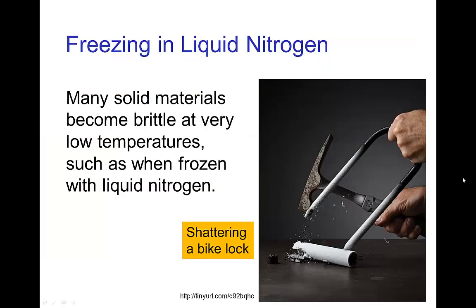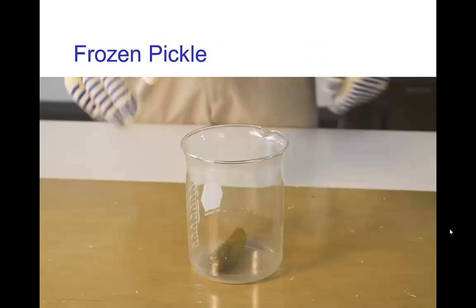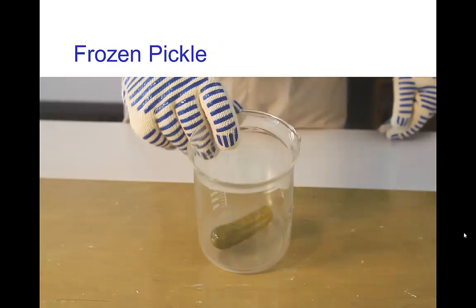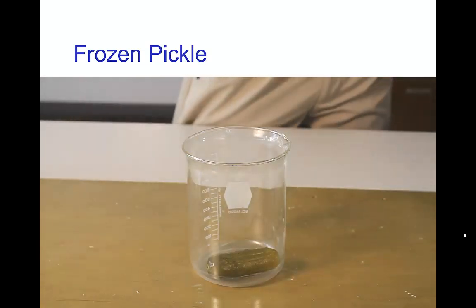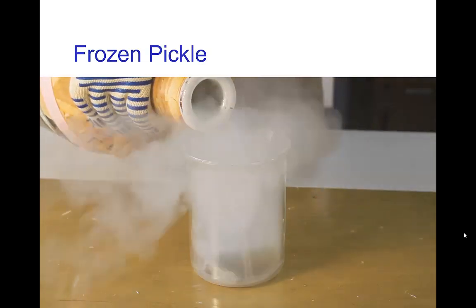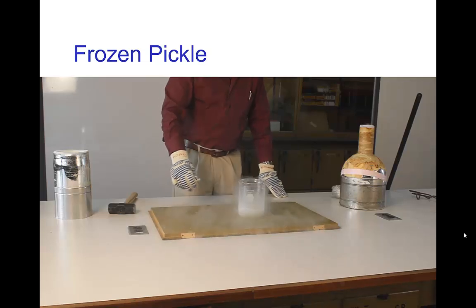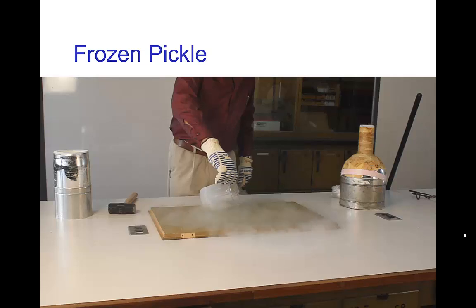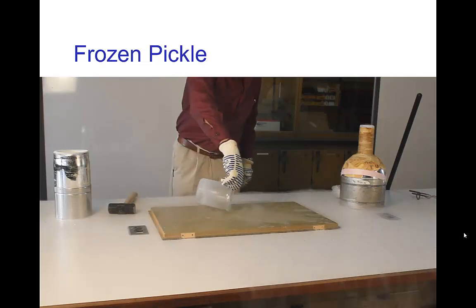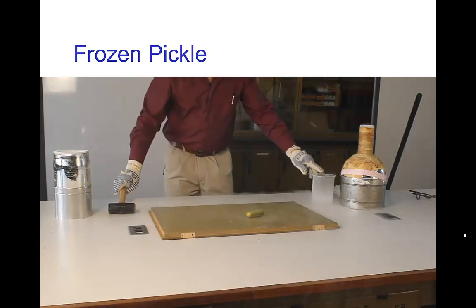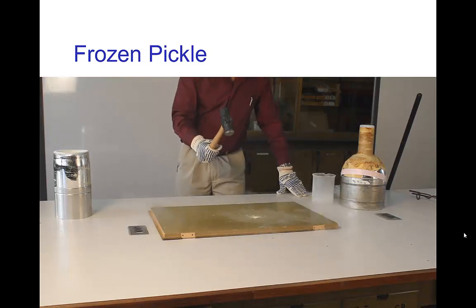Another property that changes with temperature is that if we cool objects to very low temperatures like freezing them in liquid nitrogen, many solid materials become very brittle. You can see this strong bike lock being shattered after being dipped in liquid nitrogen. Here's an ordinary pickle right out of the jar — we're going to pour some liquid nitrogen inside. The pickle has become very brittle and shatters rather easily.